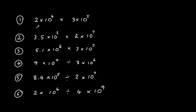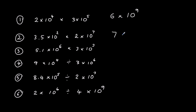Okay, so firstly, number 1: we've got 2 times 3 which is 6, and 10 to the power of 4 times 10 to the power of 5 which is 10 to the power of 9. Second one: 3.5 times 2 — two 3.5s are 7 — and 10 to the power of 2 times 10 to the power of 7; 2 plus 7 is 9, so 7 times 10 to the power of 9.